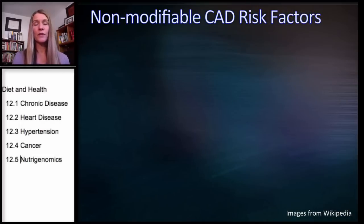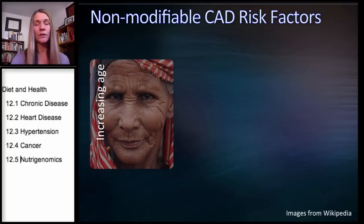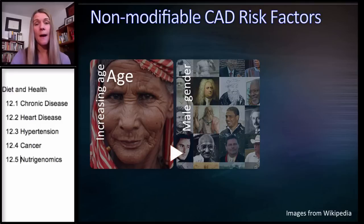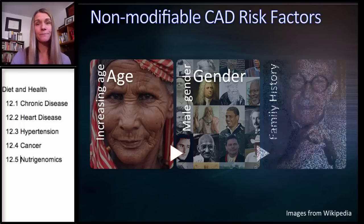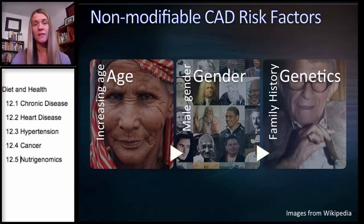Now let's talk about risk factors for coronary artery disease (CAD). Non-modifiable risk factors are things we cannot change. Aging increases our risk because we have more oxidative stress as we get older. Male gender is also a non-modifiable risk factor — men are at greater risk than women. And family history, if you have an immediate family member with heart disease, is actually a very powerful risk factor representing our genetic component.